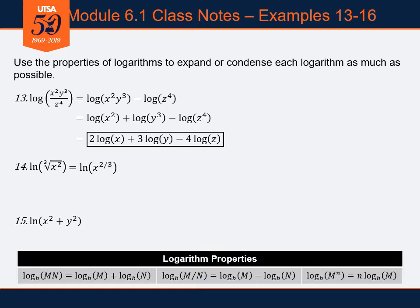We see that we've just got a power of x in the argument of that logarithm, and now we can use the power rule to bring down the power, giving us two-thirds times the natural log of x.